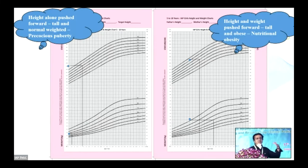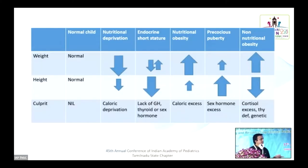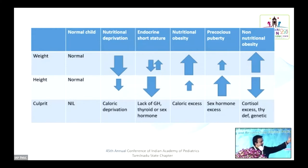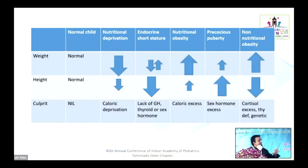The beauty of endocrinology is the interplay between physiology and pathology. Whenever height is pushed forward, think of sex hormone as the culprit. When height and weight are on different sides of the median, think of hormonal states like cortisol excess, thyroid deficiency, or genetic states. In summary: weight preserved but height affected points to an endocrine cause for short stature; obese but short points to an endocrine cause for obesity; very tall with preserved weight beyond genetic potential points to precocious puberty.